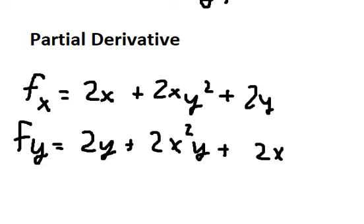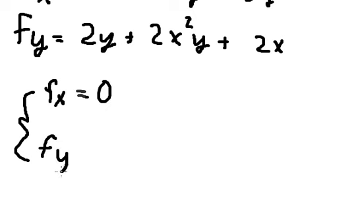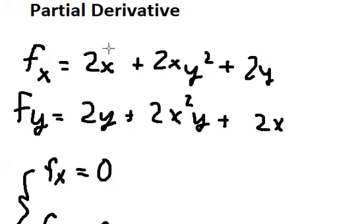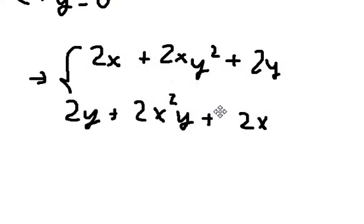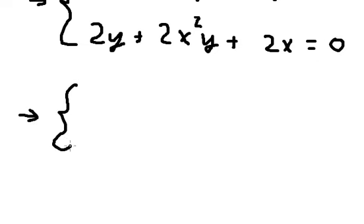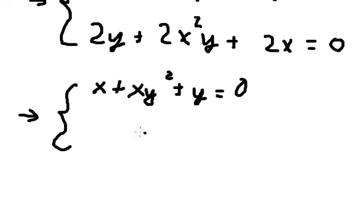And now I will put this one equal to 0. So that means we have 2 equations equal to 0. So in this one we can simplify by 2. Similarly for this one.